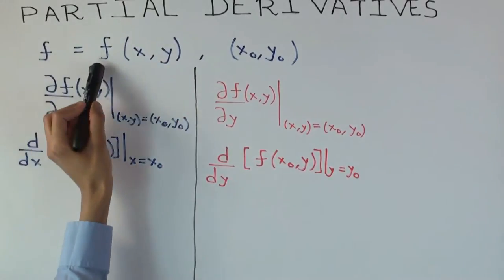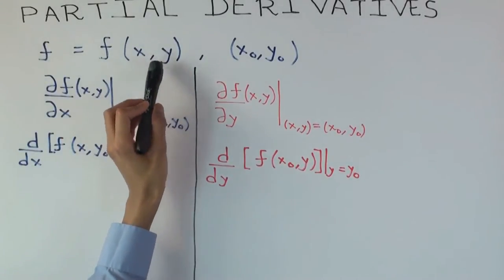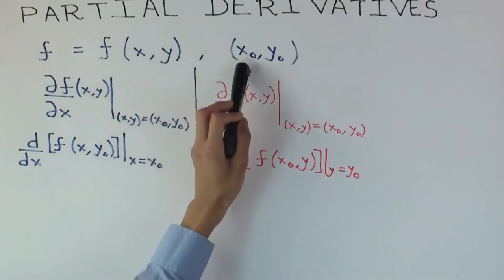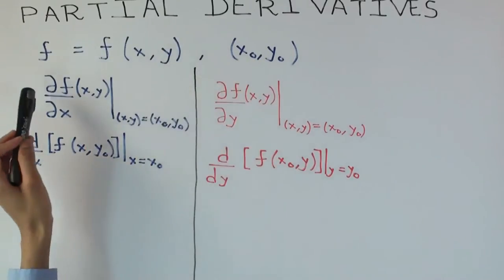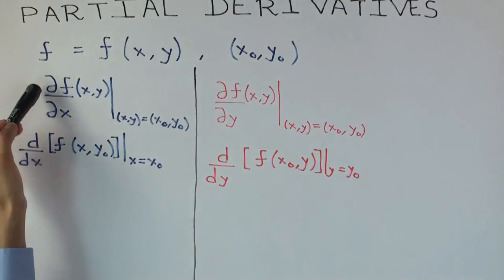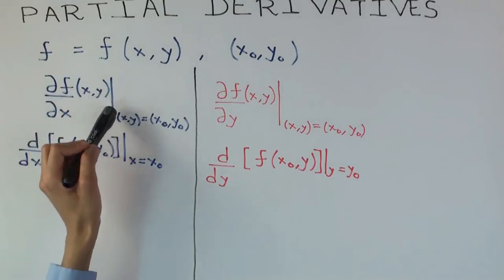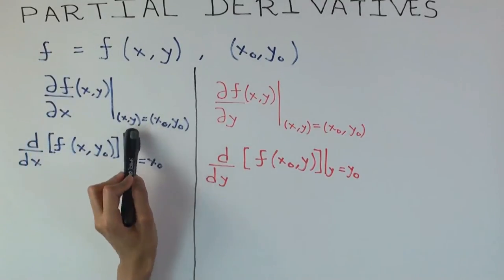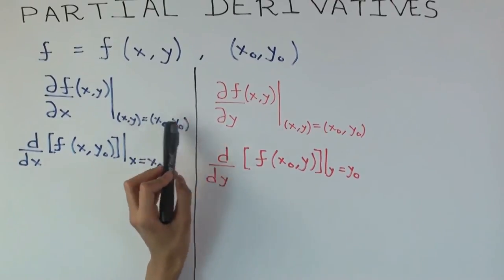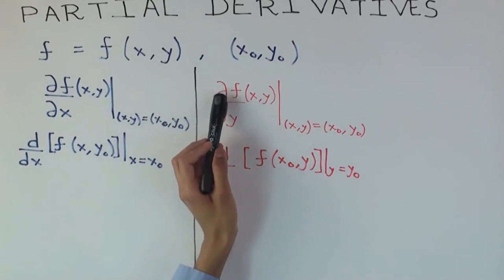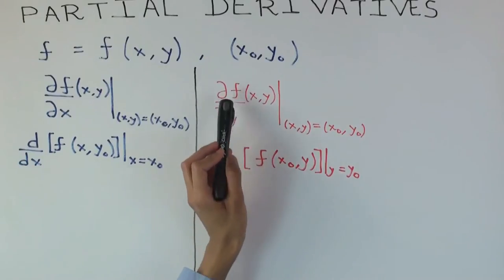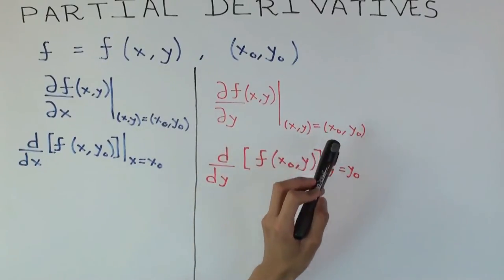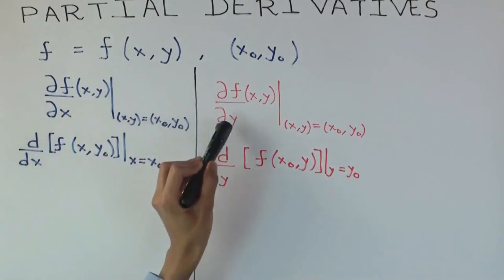The function is a function of two variables, x and y. We are trying to calculate the derivative at a point x0, y0. The general notation is df/dx at (x,y)=(x0,y0), and this specifies the point of evaluation. Similarly for the y derivative, the notation is df/dy at (x,y)=(x0,y0). The only difference here is x and y.